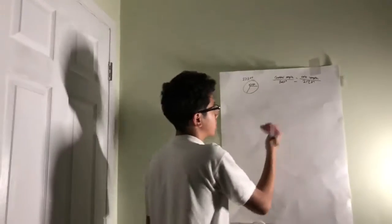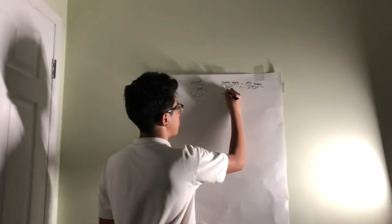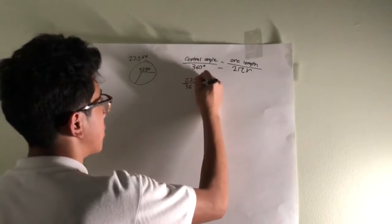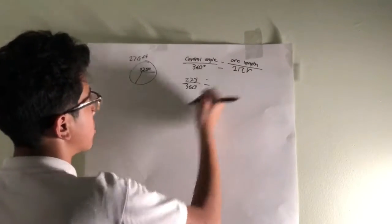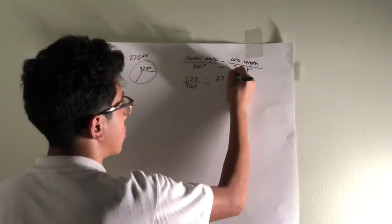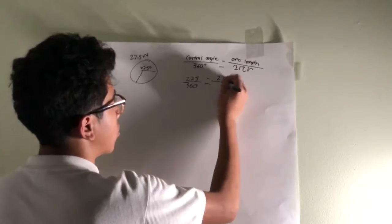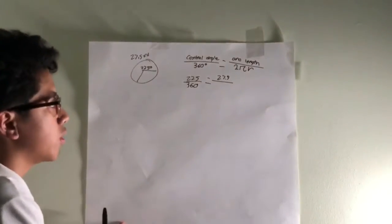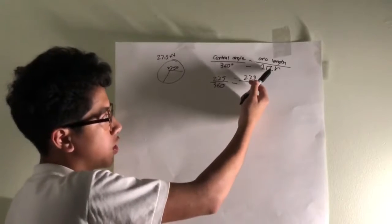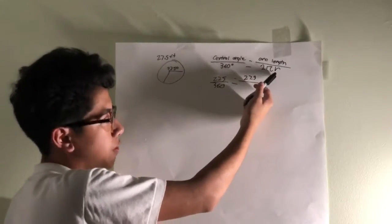So given the information that we have now, we have the central angle, which is 225 over 360, equals the arc length, which is 27.5, over 2 pi r. Since we only know pi is 3.14, we can only multiply 3.14 by 2, but we leave the variable r, which gives us the 6.28 r.